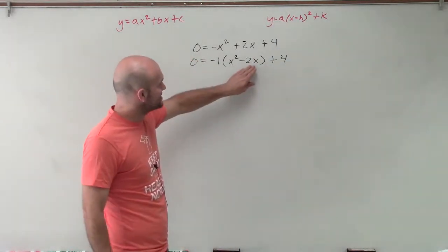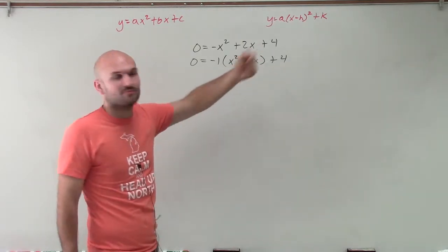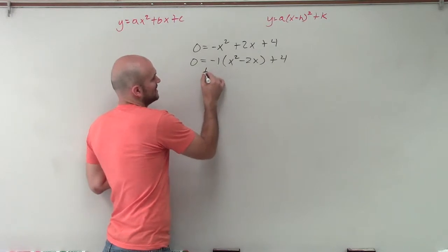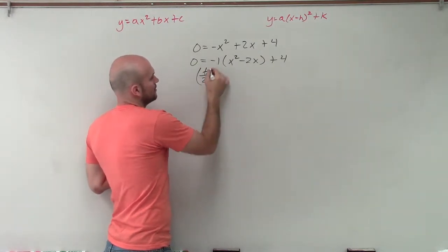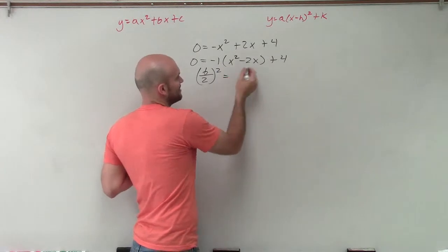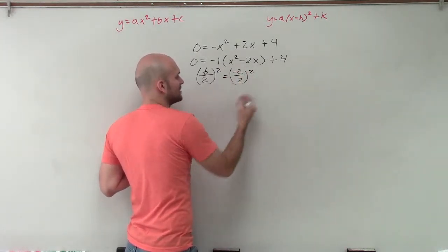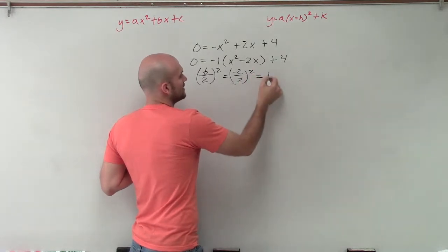So now I just need to be able to figure out the value of c that is going to complete my square or make a perfect square trinomial. So to do that, I take b divided by 2 and square it. So in this case, my b is negative 2 divided by 2 squared. Well, negative 2 divided by 2 equals negative 1. Negative 1 squared equals 1.